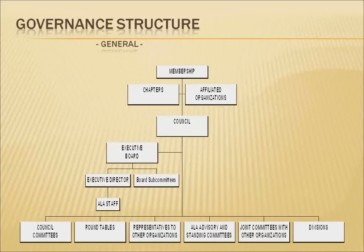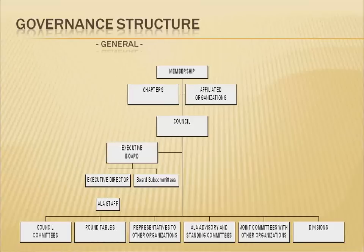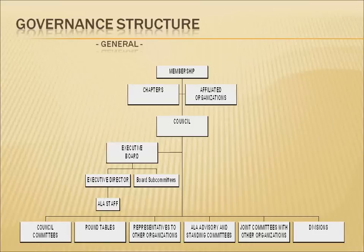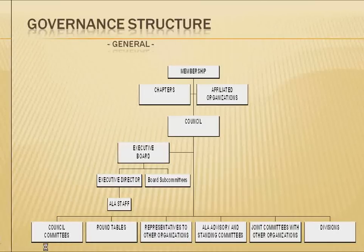We also have chapters throughout the United States, basically at the state level, that intersect with our members on the local level and reflect the special interests and needs of librarians and other information professionals working in those state environments. So clearly, this is a very complex organization of policy groups, regional groups, and standing and ad hoc committees that carry out the work of the association. This complexity is reflected in the budget and finance work of the organization.